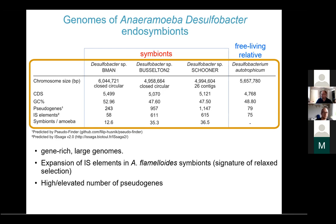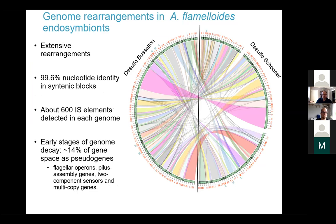The flamyloides endosymbiont genomes turn out to be very closely related — in syntenic blocks they are 99.6% identical — but show extensive rearrangements. On the outside of the ring diagram, each red tick represents an IS element in each genome. It looks like some IS elements were inserted in a common ancestor, but many are novel with new insertion sites.